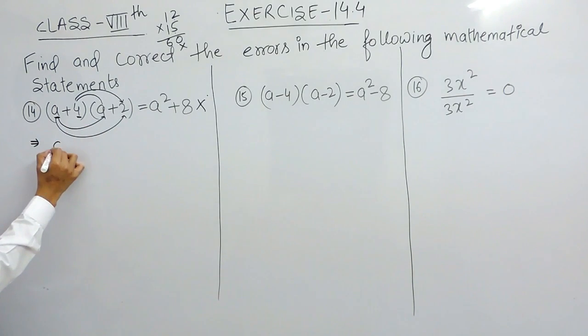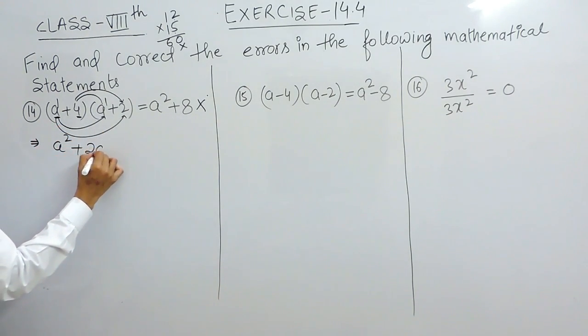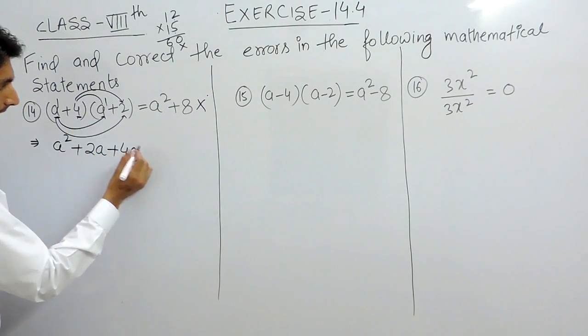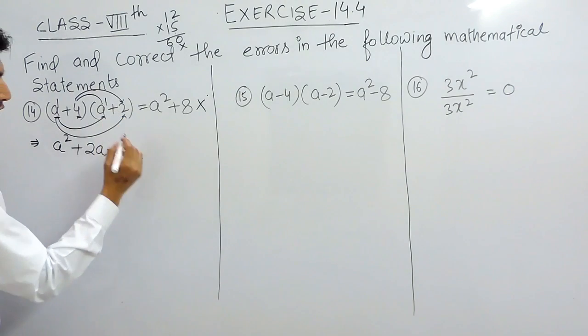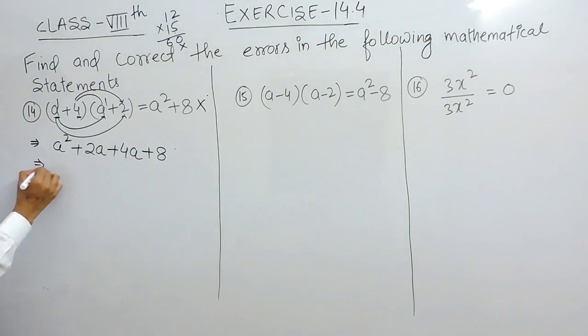So a multiplied by a should give a square. Bases are same, power should be added. Now a is multiplied by 2, so it should give 2a. 4 multiplied by a should give 4a, and 4 multiplied by 2 should give 8. So this is the correct expression.